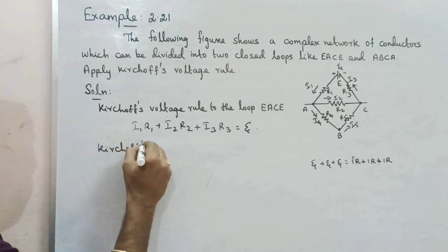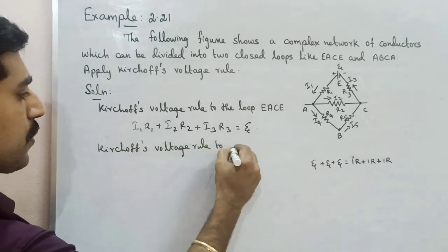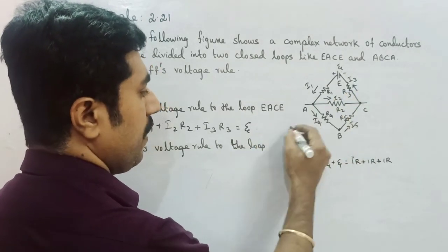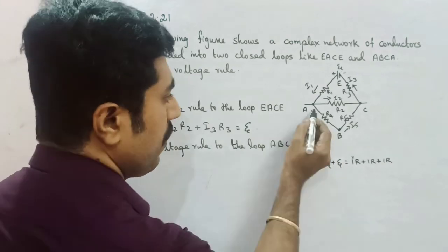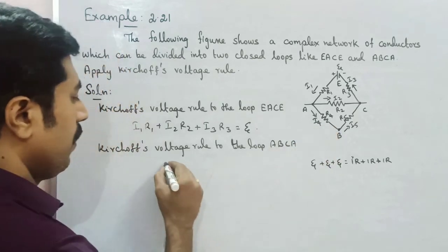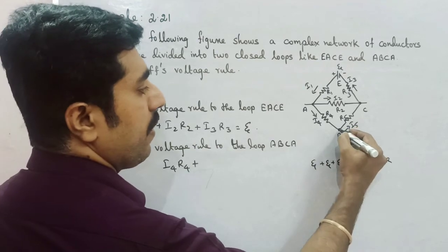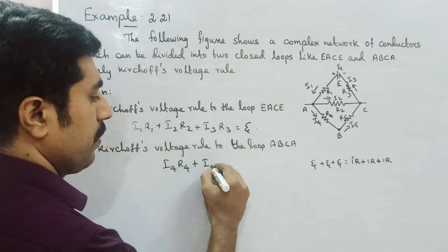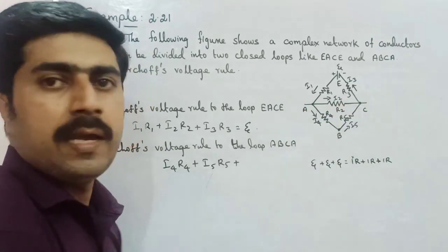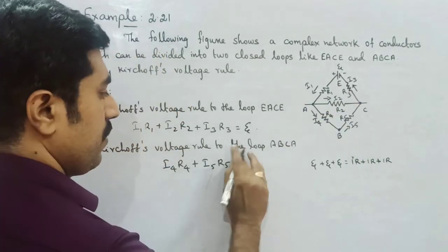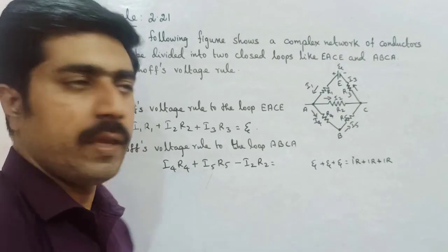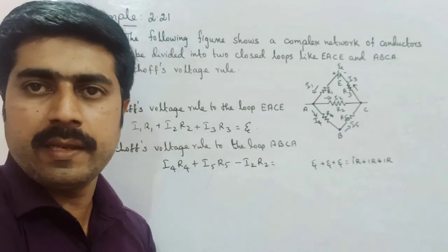Applying Kirchhoff's Voltage Rule — the second rule — to the closed loop ABCA: I4 into R4, plus I5 into R5 in the B-C direction. Then for the C-A segment, since the current direction is opposed, we get minus I2R2. In the closed loop, any cells are equal — the battery gives minus EMF of zero.